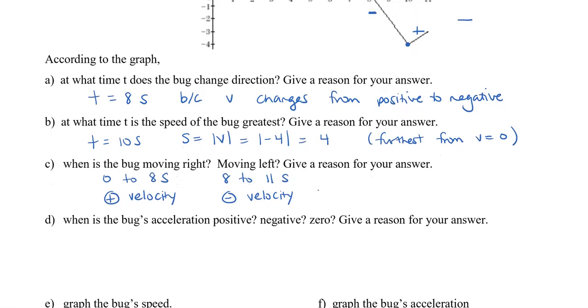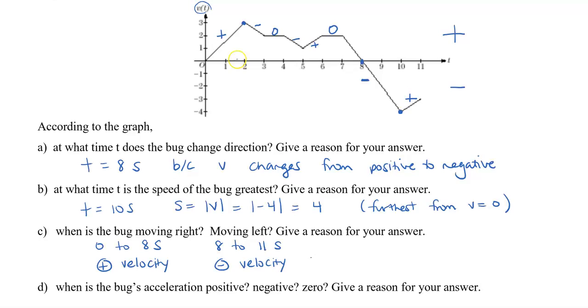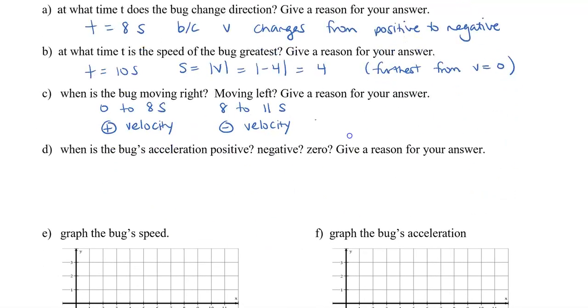So, when is the bug's acceleration positive? We can see it's from 0 to 2, 5 to 6, and then 10 to 11. And the reason is the slope is positive.